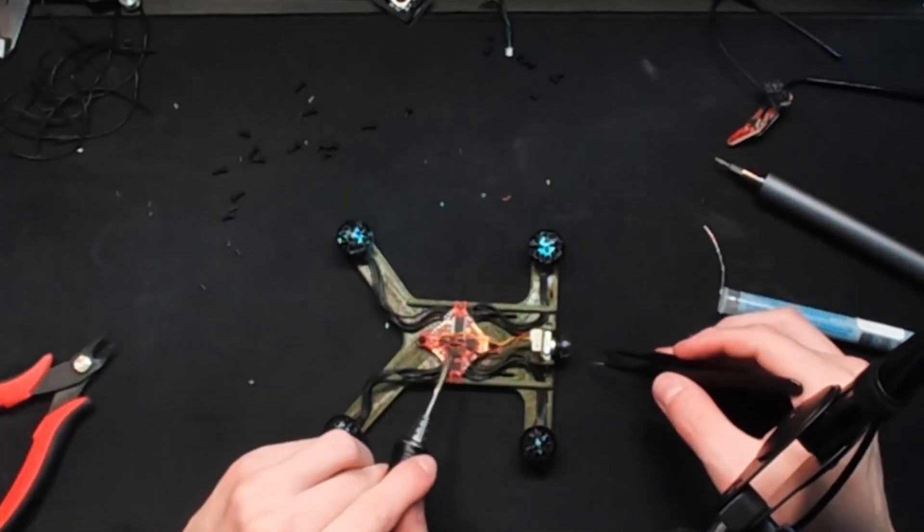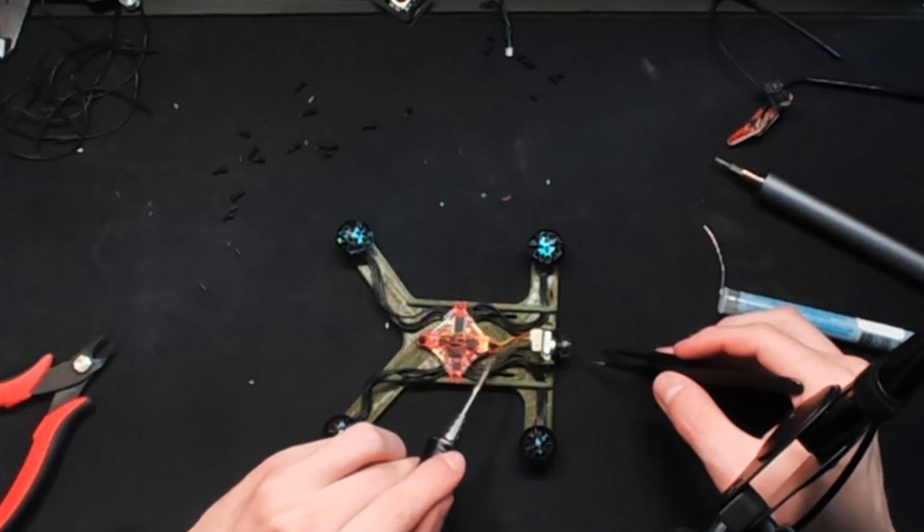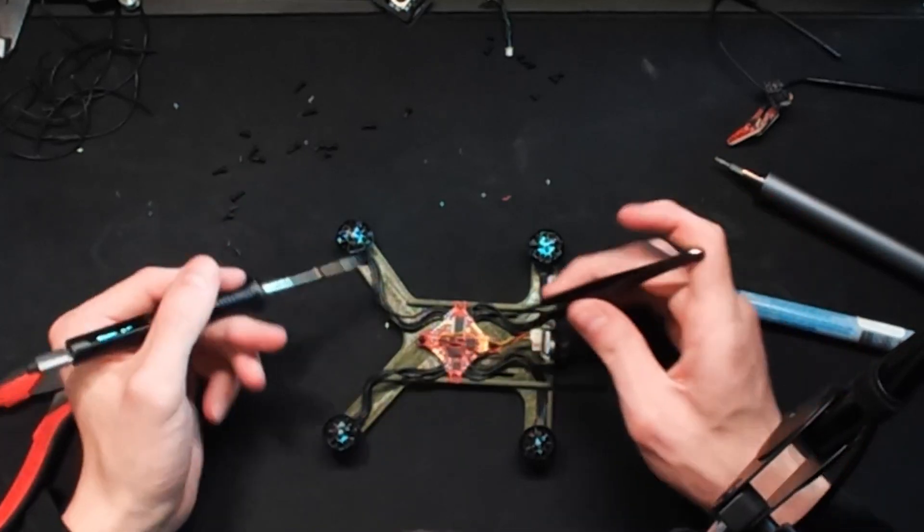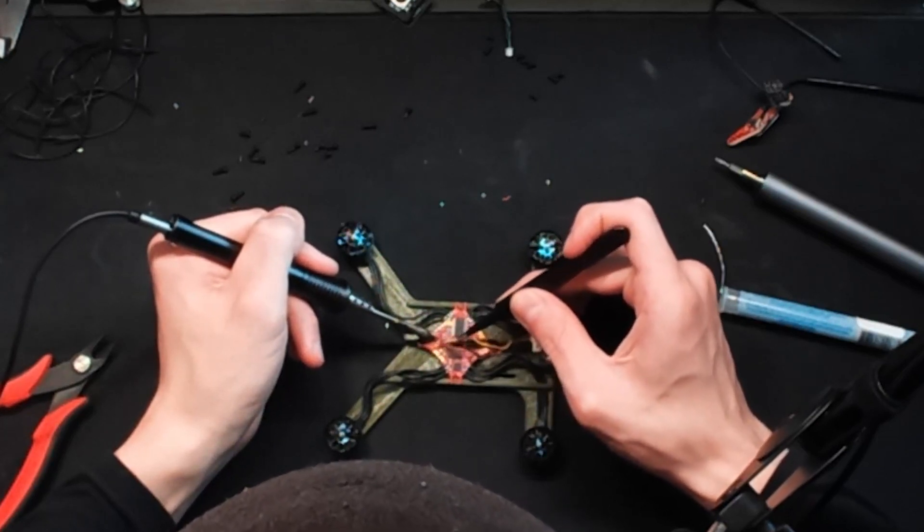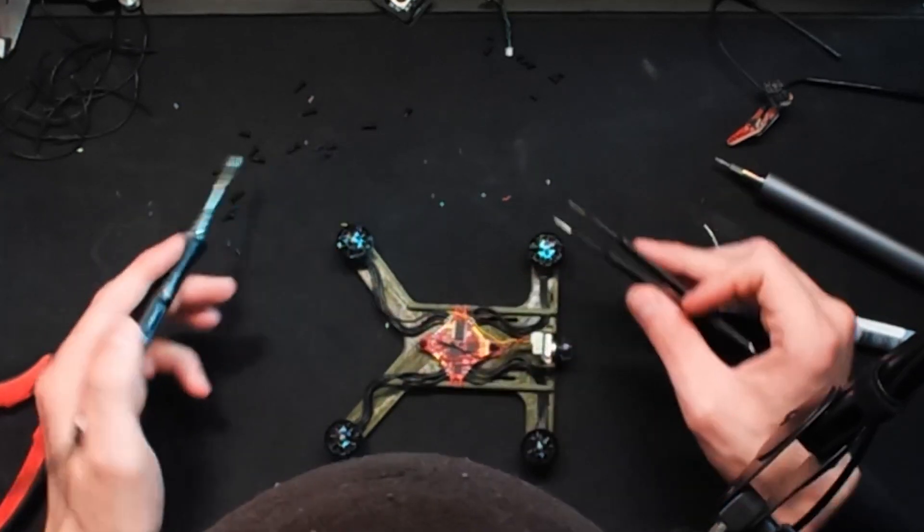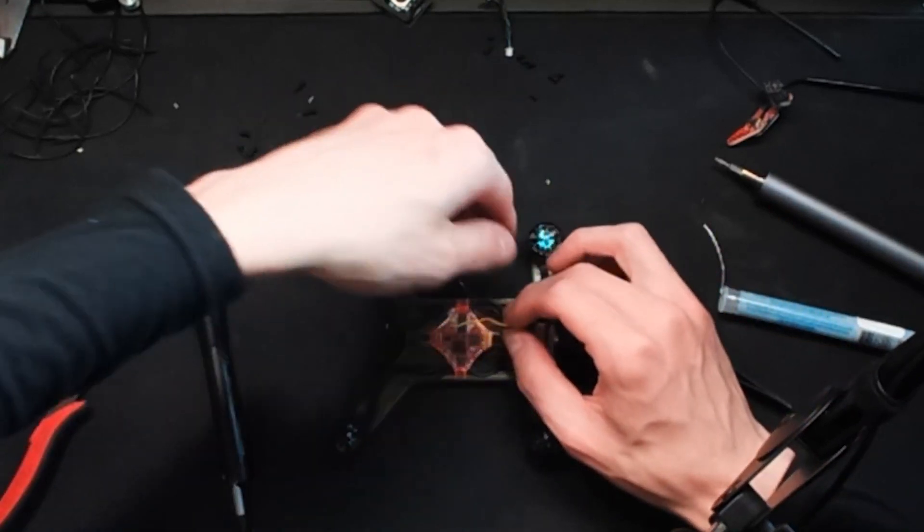Now you can see right here, this is wrong. This should all be twisted or else you'll get a lot of interference in your video feed from the motor wires and other noise generating components. So we're going to undo that real quick and make sure these are all twisted together.